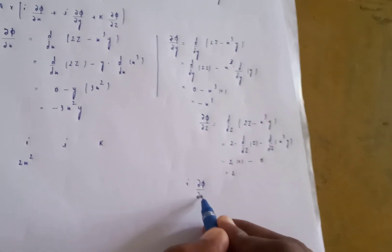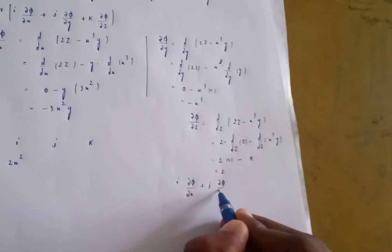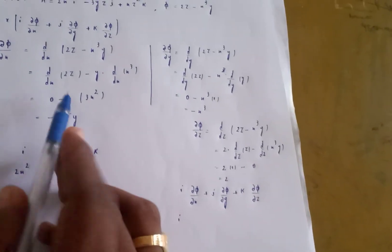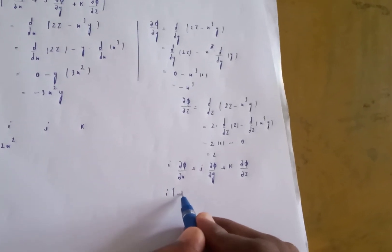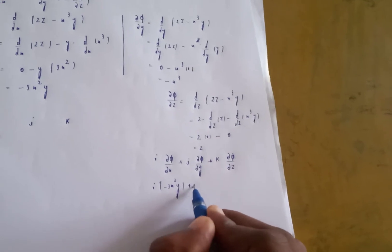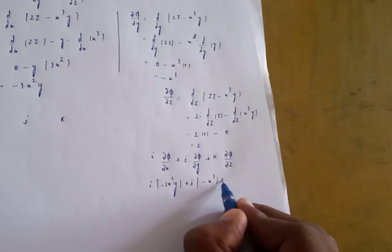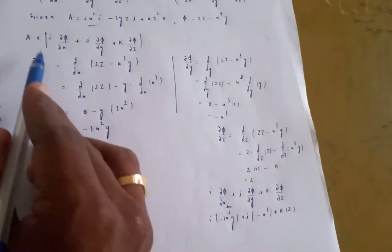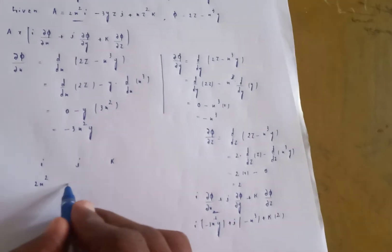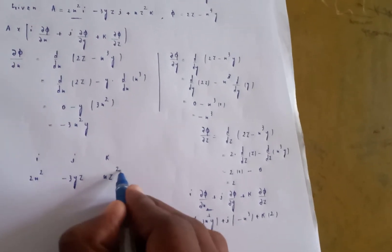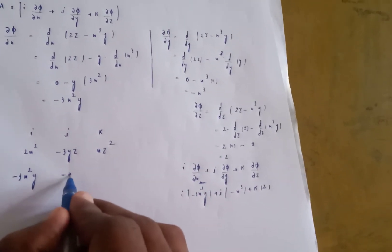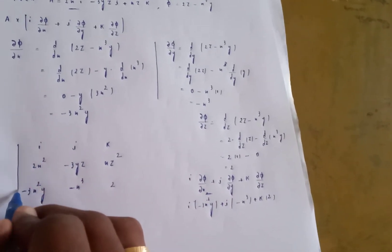Now setting up the cross product. A equals 2x² i minus 3yz j plus xz² k. The gradient vector is: i of (minus 3x²y) plus j of (minus x³) plus k of 2. We apply the determinant method for A cross ∇φ.